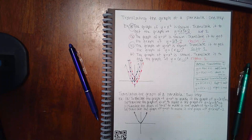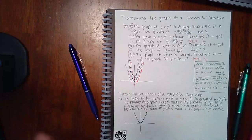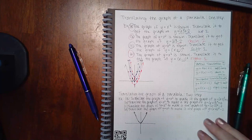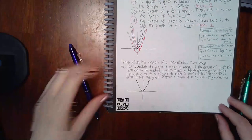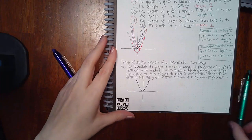It looks like a bunch of mess because I drew them all on the same graph. When doing this in ALEX, keep your eyes on the original and then shift that graph however many units you need to in whatever direction you need to.